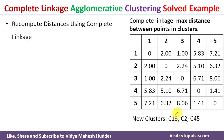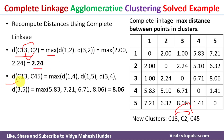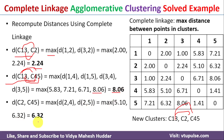The distance between cluster C13 and C2 is the maximum of distances between data points 1 to 2 and 3 to 2, which equals 2.24. The distance between C13 and C45 is the maximum of distances between data points 1 and 4, 1 and 5, 3 and 4, and 3 and 5 — the maximum value is 8.06. The distance between C2 and C45 is 6.32.